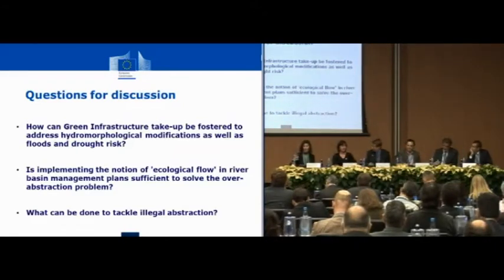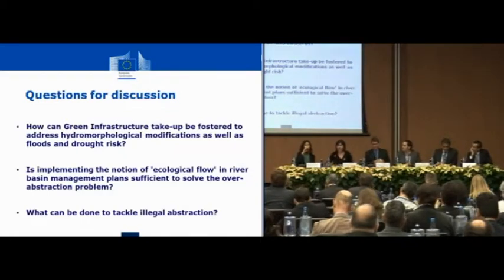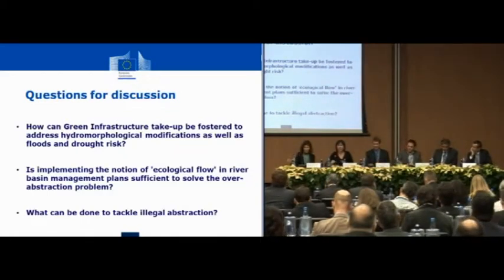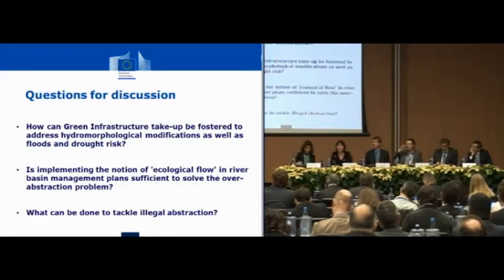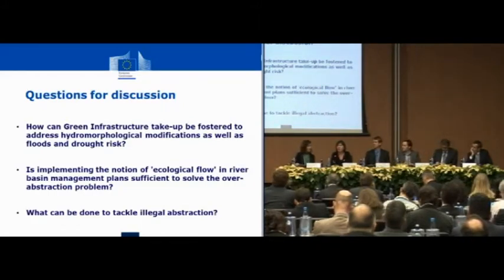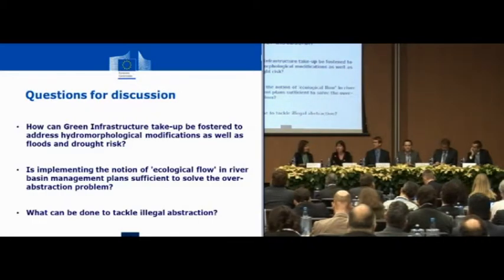We've heard quite a bit about how to progress with ecosystem restoration, which of course is very important. But I would like to highlight another aspect: the need to maintain the green infrastructure that we still have. That is why we, as WWF, together with other NGOs, are promoting a strategic approach — for example, for hydropower planning — where we first map and assess those areas and river sections that play an essential role for the overall system.